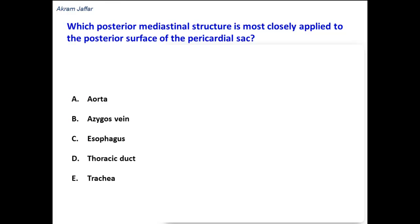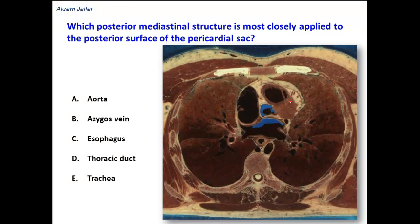In this question, which posterior mediastinal structure is most closely applied to the posterior surface of the pericardial sac? In this case, we have to imagine a transverse section of the thorax — whether it's an axial CT, MRI, or an actual transverse section — and keep in mind the structure located in the posterior mediastinum that lies immediately posterior to the pericardial sac.